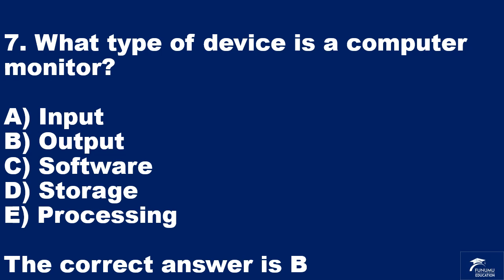Question 7. What type of device is a computer monitor? A: input. B: output. C: software. D: storage. E: processing. The correct answer is B.